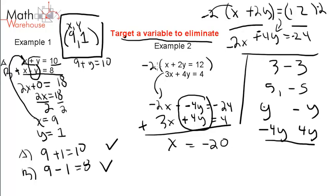Step 1 is to target a variable to eliminate and multiply or do whatever you need to make the variable be eliminated—you want an additive inverse. After that, step 2 is to substitute. We've got an x of negative 20, and we can put that into either equation to get our y value.